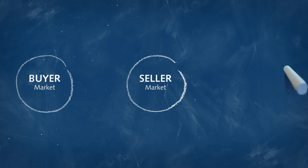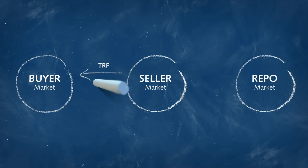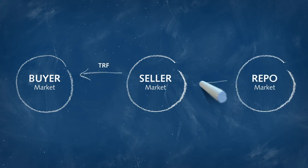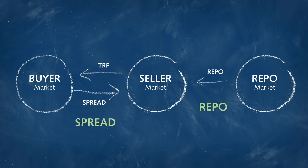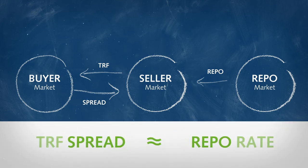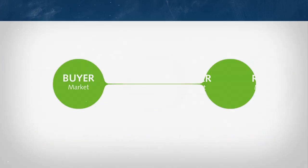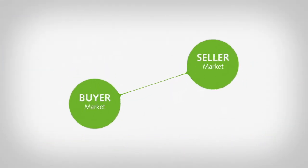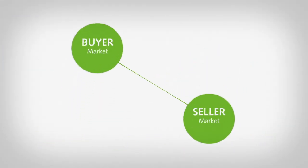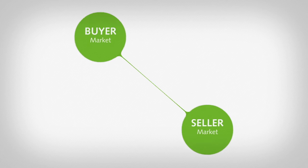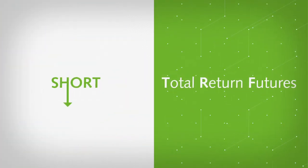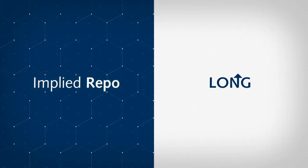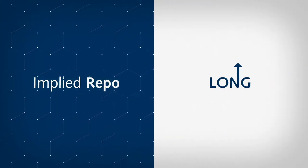Since the seller of a TRF is the lender of the underlying and receives repo, the spread should be approximately equal to minus repo. This also means that the lower the repo, the higher the spread of a TRF — and being short a TRF also means being long the implied repo.